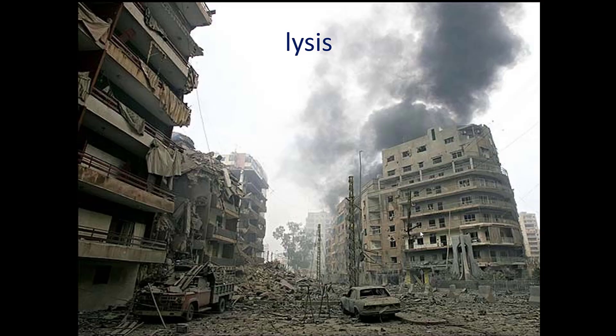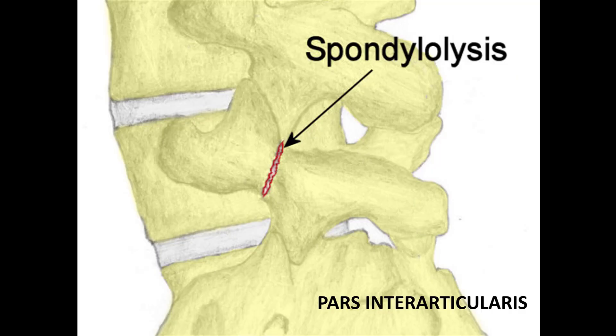When you tell a patient — and usually these are children, frequently these are children — that they have a broken bone or lysis, this is what the mother sees in her mind: disaster. You say something in my child's spine is fractured. Spondylolysis: spondylo means spine, lysis means something broken. So there's actually a fracture in the spine, and when you hear your spine is fractured, it's terrifying.